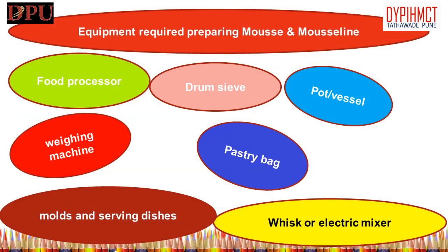Equipment required for preparing mousse and mousseline: 1. Food processor — to work the main item into a puree or paste. 2. Whisk or electric mixer with a wire whip — to prepare the egg whites and/or cream. 3. Drum sieve — to strain the base. 4. Pot or vessel for ice water bath — to cool the mixture. 5. Weighing machine — to weigh the ingredients used. 6. Various molds and serving dishes — to set the mousse. 7. Pastry bag — to shape the finished mousse.